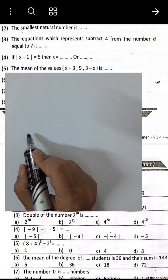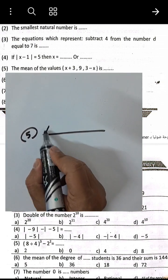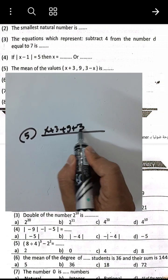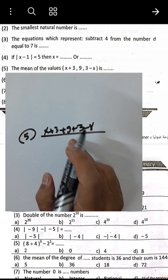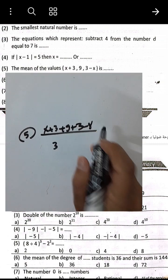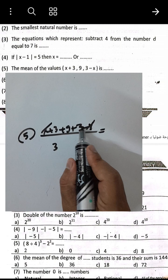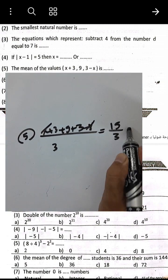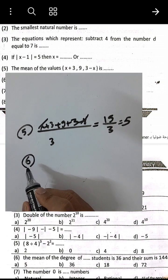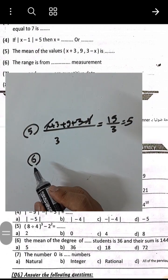Question number 5: The mean of the values — sum the values and divide by the count. We have x plus 3 plus 9 plus 3 minus x, divided by 3. The x and negative x cancel; 3 plus 9 plus 3 equals 15. 15 divided by 3 equals 5. The mean is 5.